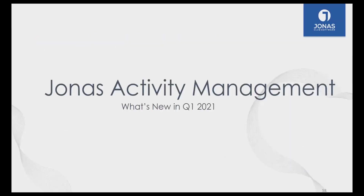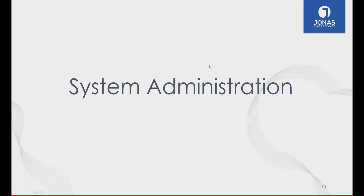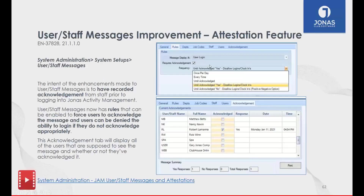Passing it over to Rob Lamana to cover Jonas Activity Management (JAM) new features for Q1. The first thing is in System Administration — attestation — which Jeremy touched on for JCM. Depending on whether staff log into JCM or JAM, they'll be presented with the same attestation where they have to attest to their health status. You can have them acknowledge yes or no to questions like: have you experienced symptoms, do you have a fever, have you been in contact with anyone, are you currently self-isolating?